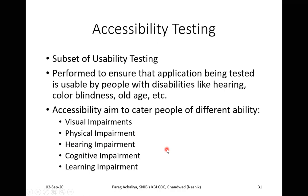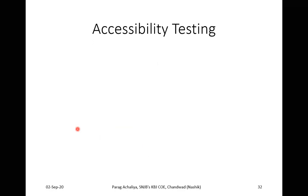Hearing impairment means the user will not be able to identify what is exactly happening with audio. Cognitive impairment depends upon human psychology. Learning impairment relates to difficulty in learning. These are the types of impairments where accessibility testing is carried out.